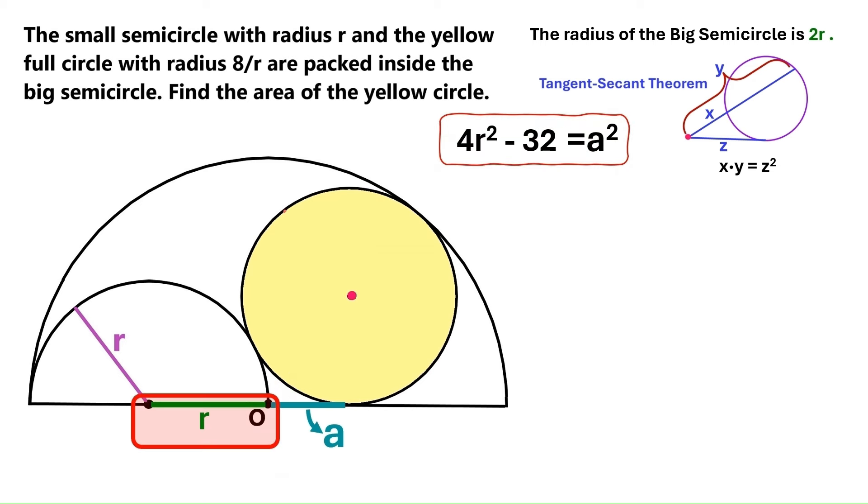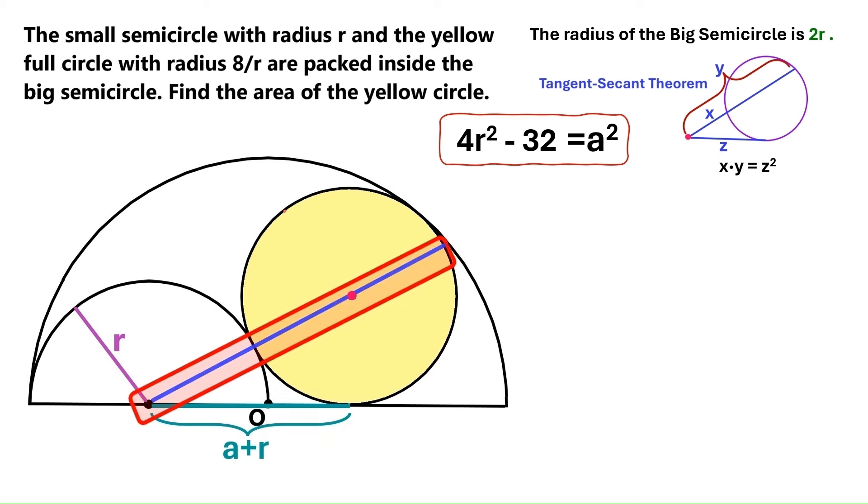Now, we know this distance is r. So this whole segment must be a plus r. And let's draw this straight line here. This distance is r, because it's the radius of the small semicircle.